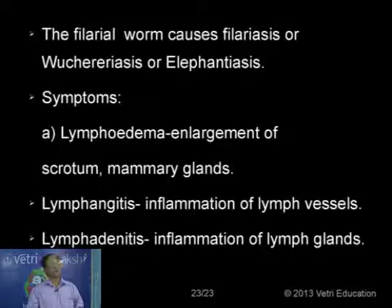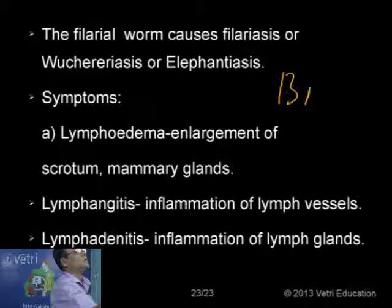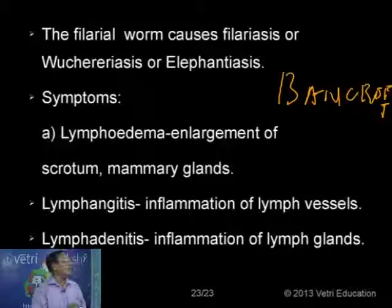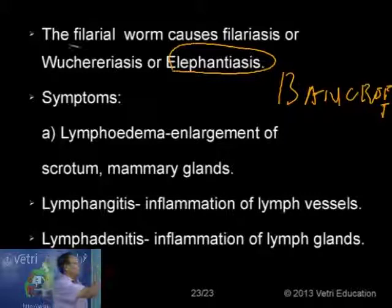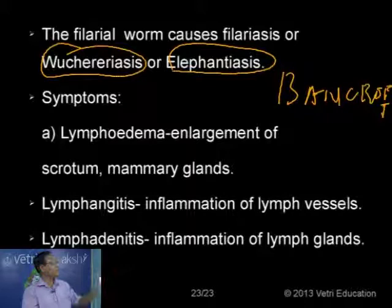The filarial worm causes the disease called filariasis, also called Bancroft fever, or ulceriasis or elephantiasis — an enlargement of the limbs. The major symptoms are three: lymphoedema, which is accumulation of fluid due to blockage of the lymphatic system, causing enlargement of mammary glands, scrotum, hands, and limbs.